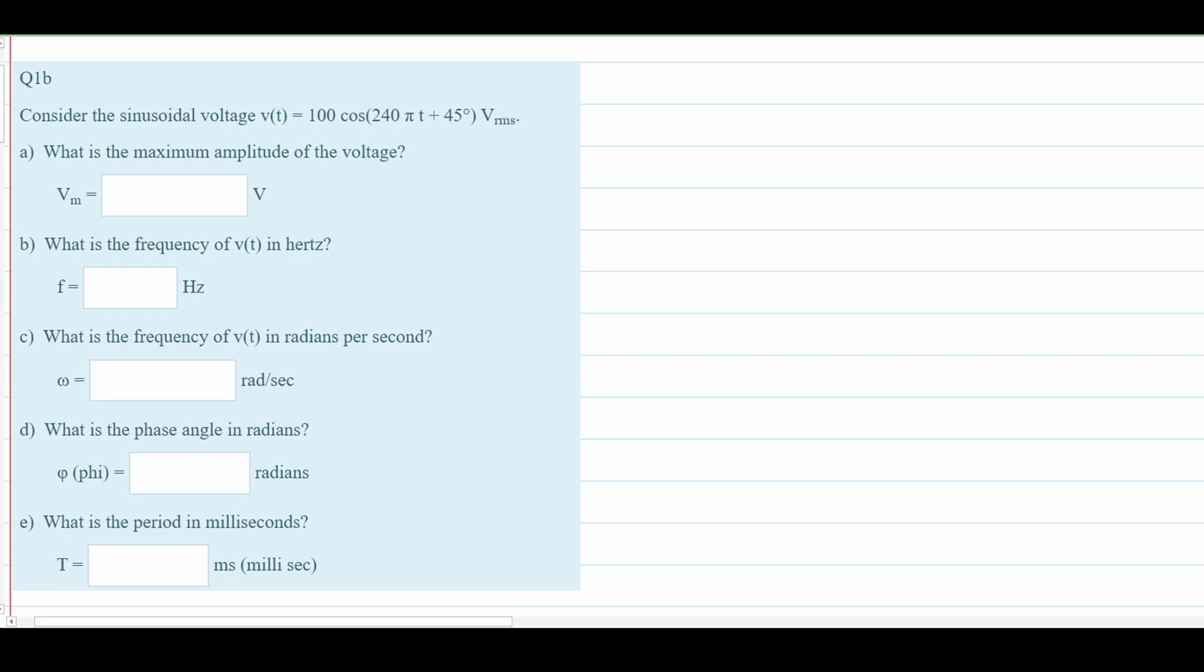For this quiz problem, we are asked to consider the sinusoidal voltage V(t) equal to 100 cos(240πt + 45°), and we're measuring this in Vrms.